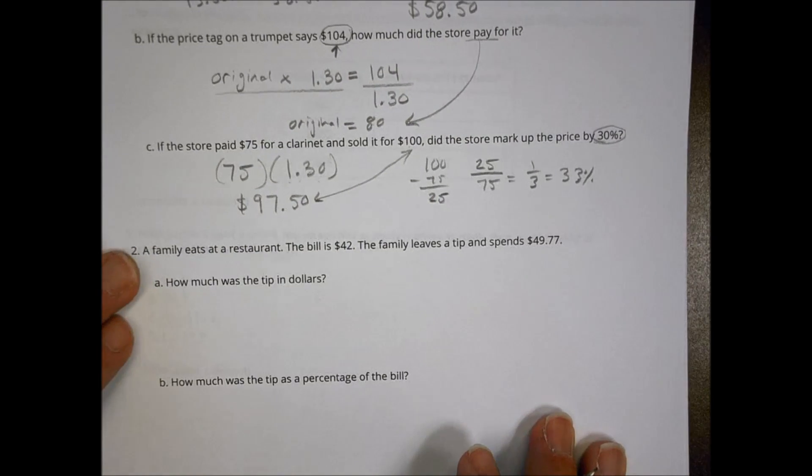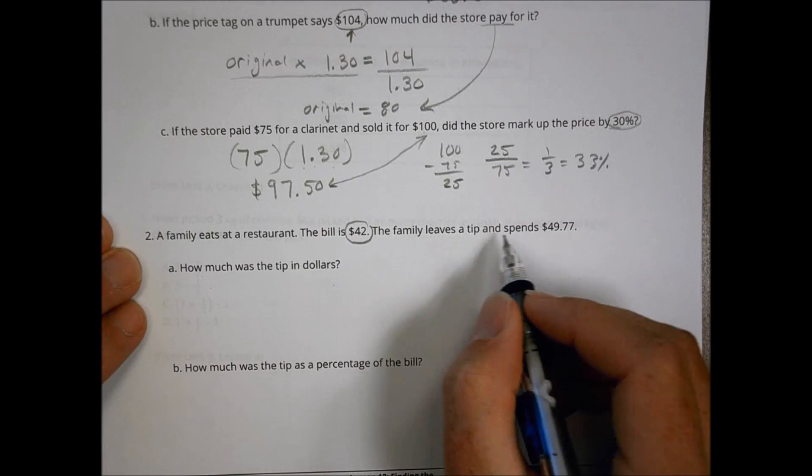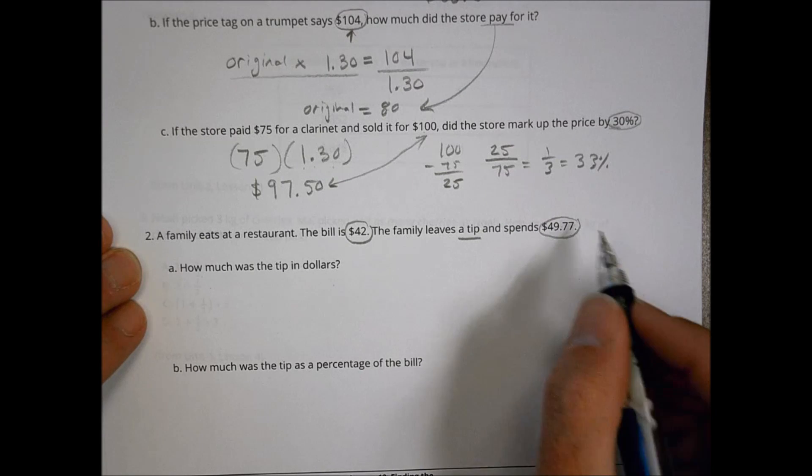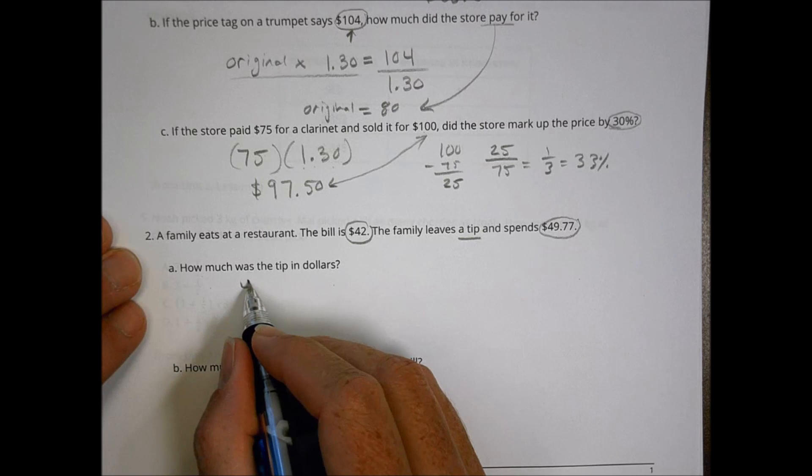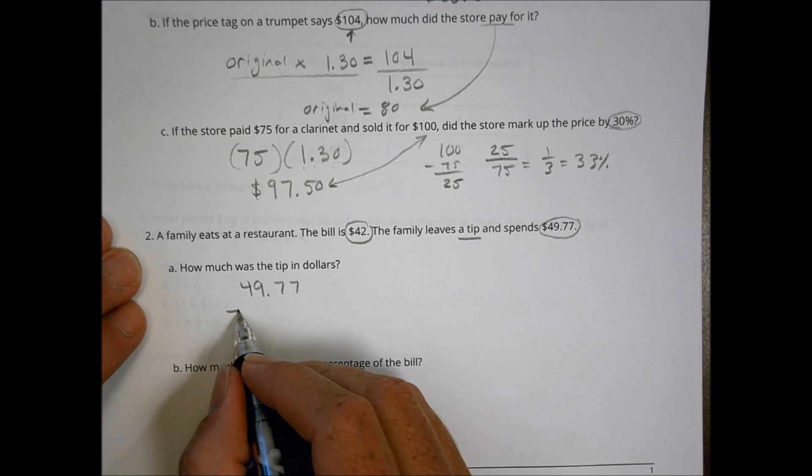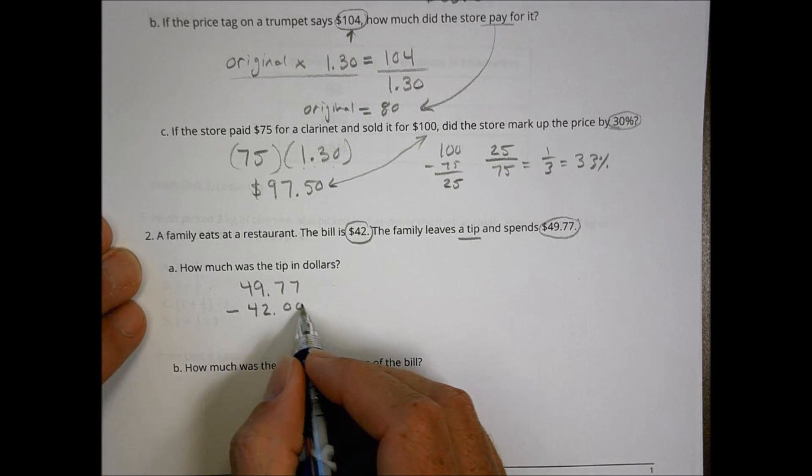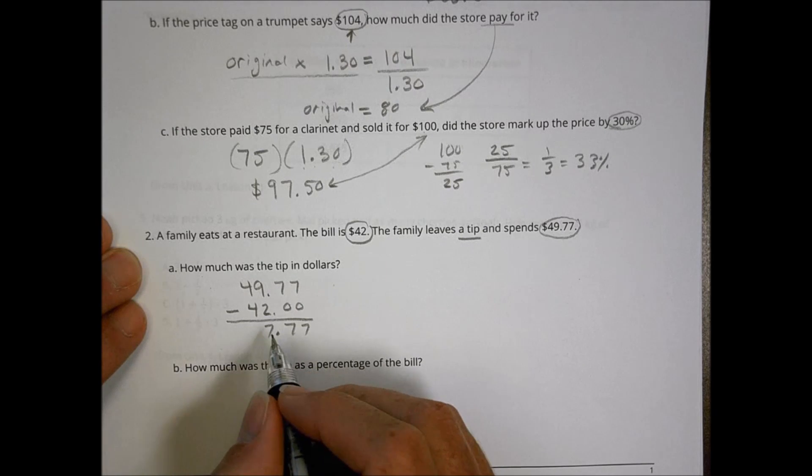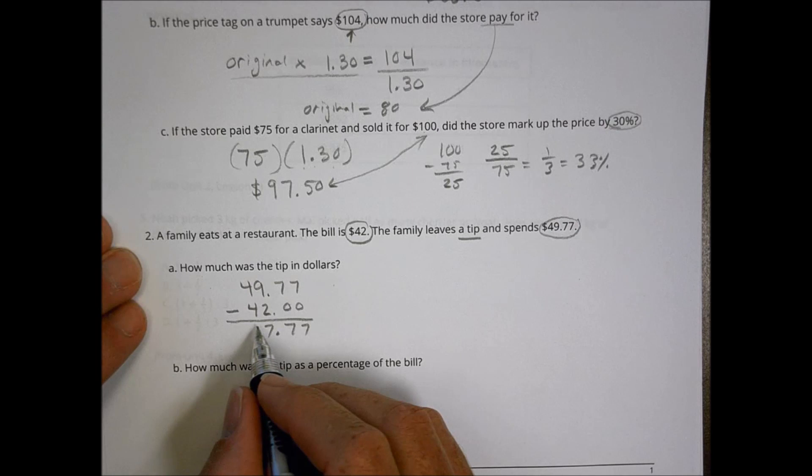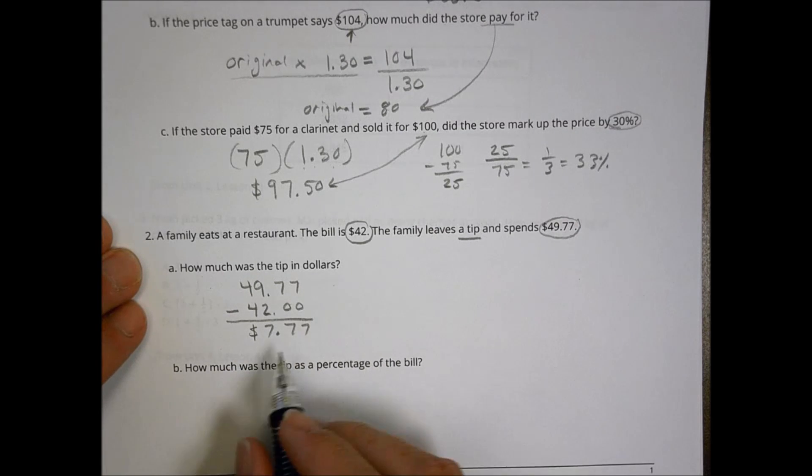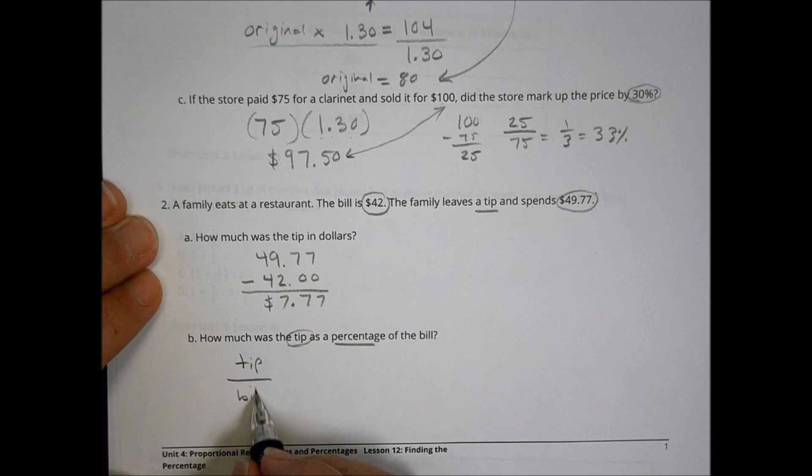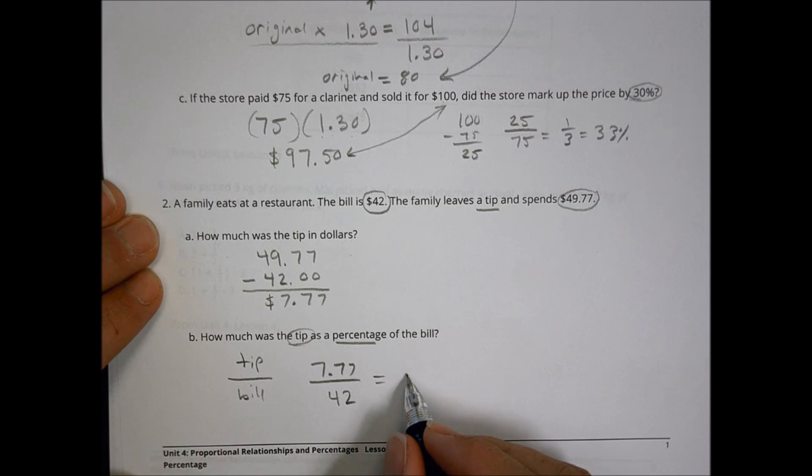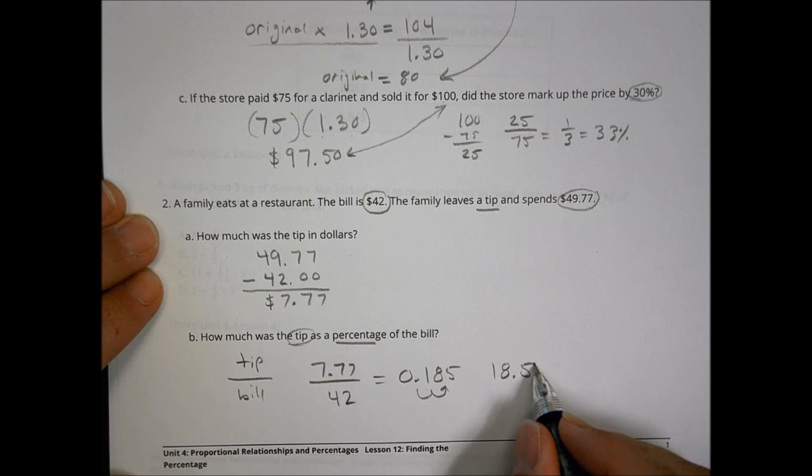Number two, a family eats at a restaurant, the bill is $42. The family leaves a tip and spends $49.77. How much was the tip in dollars? Well, let's take our total amount that they spent, $49.77. And let's subtract from that the amount of the bill. So that becomes $7.77, which is what they spent on that bill or what the tip was going to be. So how much was the tip as a percentage of the bill? So that is found by doing tip divided by the bill. Our tip was 7.77 and the bill it said was 42. So 7.77 divided by 42 is 0.185. Turn that into a percent. We're going to move over two spaces and that becomes 18.5%.